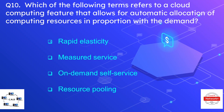Question number ten: which of the following terms refers to a cloud computing feature that allows for automatic allocation of computing resources in proportion with the demand? The options are rapid elasticity, measured service, on-demand self-service, or resource pooling. The correct option is rapid elasticity.